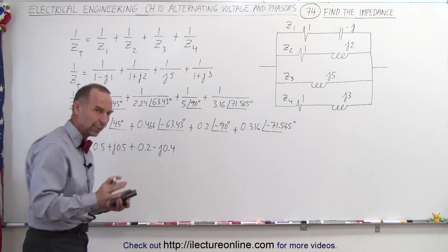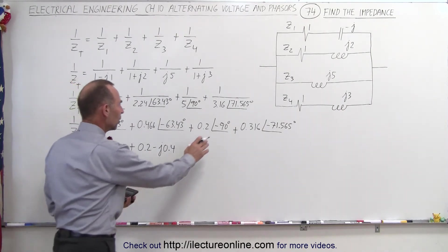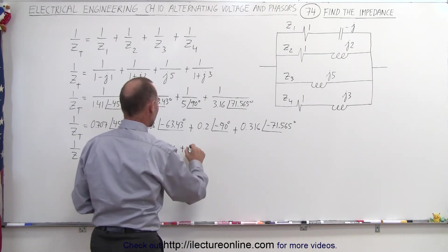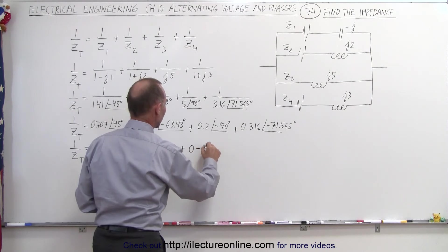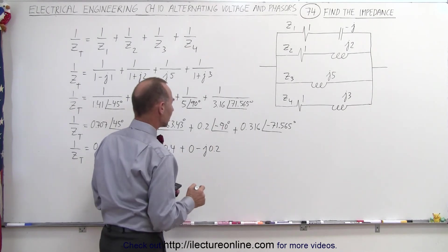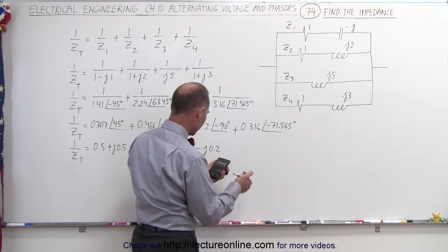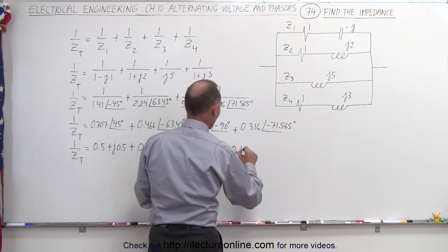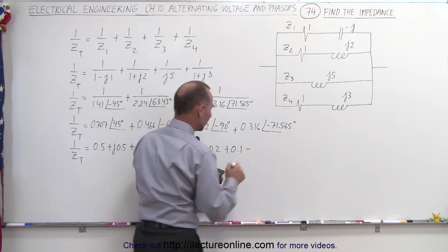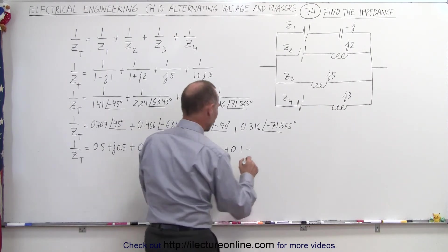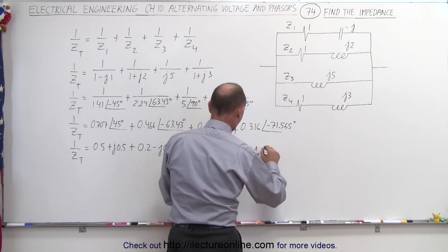We're doing a little bit of rounding here to get nicer round numbers. The third term has no real part, only an imaginary part, so that would be 0 minus J0.2 because of the 90-degree angle. And finally, cosine of 71.565° times 0.316 gives plus 0.1, and sine of 71.565° times 0.316 gives minus J0.3.